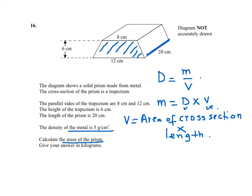So the mass of the prism will be M equals the density, which is 5, times the volume we said is the area of the cross section by the length. What is the area of the trapezium?